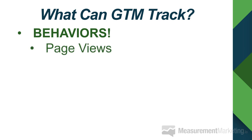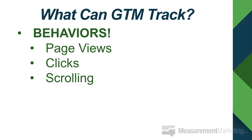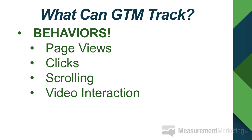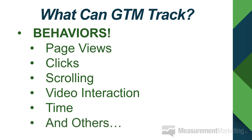What can GTM track? It really comes down to one word: behaviors. Think about all the different behaviors happening on your site — page views when somebody loads a page, clicks happening on that page, scrolling up and down, video interaction like who clicks play or watches for a certain percentage, time on page — 30 seconds, 45 seconds, five minutes — and just about anything else you can imagine as a behavior can be measured with Google Tag Manager.